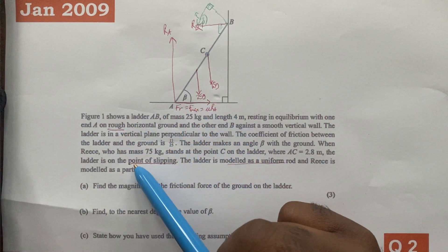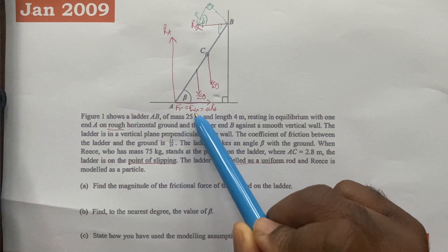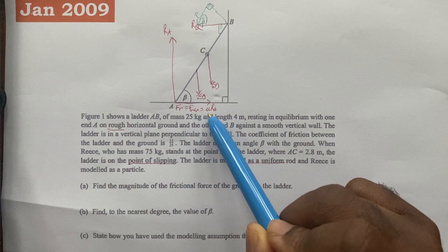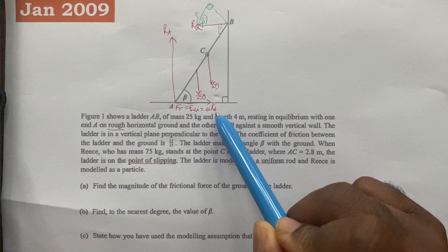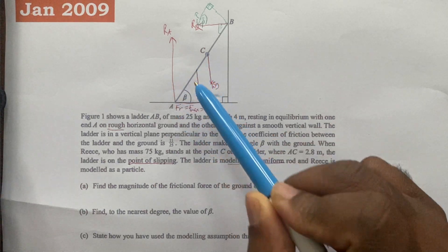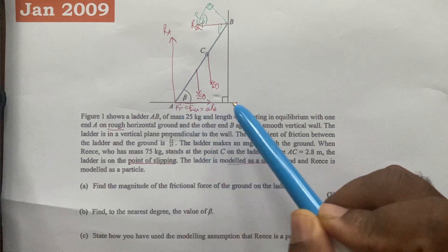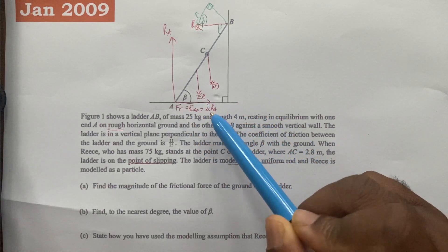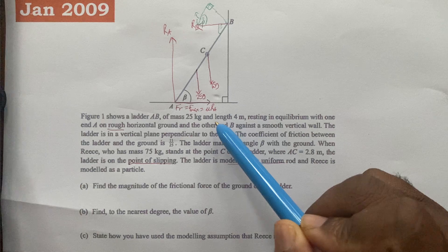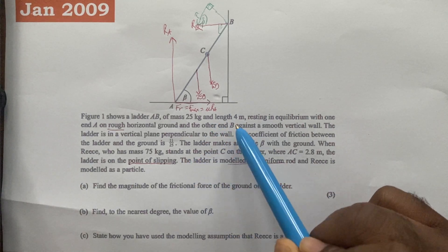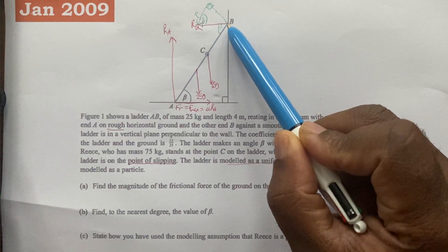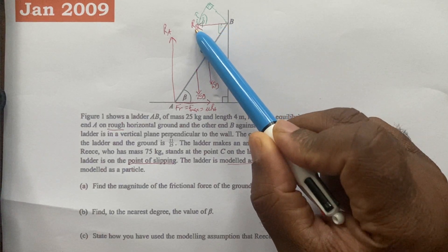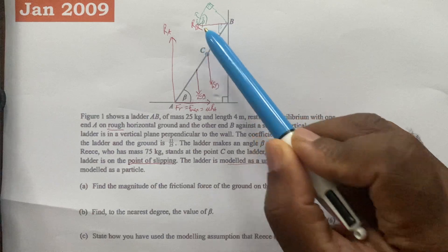It is at the point of slipping, therefore friction will be maximum friction, and by formula that will equal the coefficient of friction mu times the normal contact force RA. The ladder is leaning against a wall so we're going to have a reaction or normal contact force there which we'll call RB.